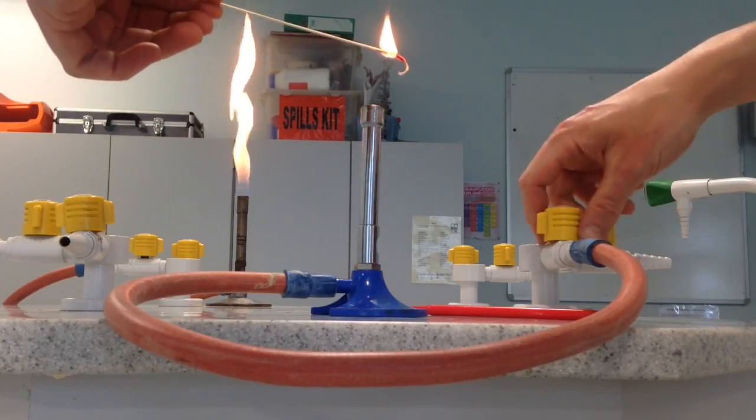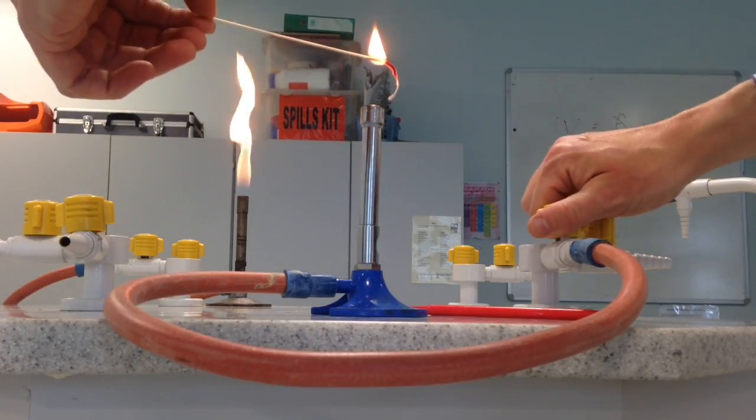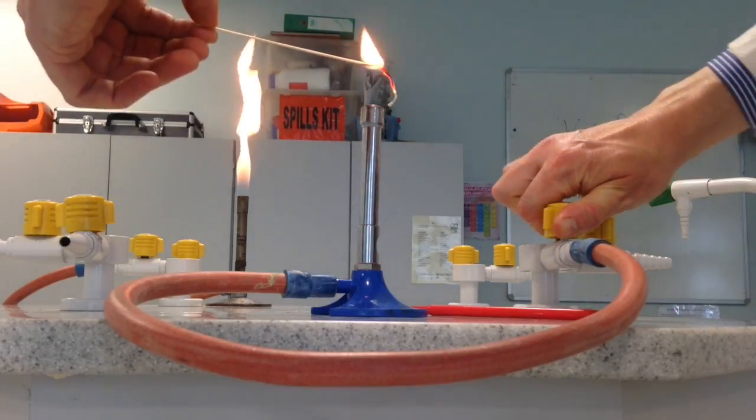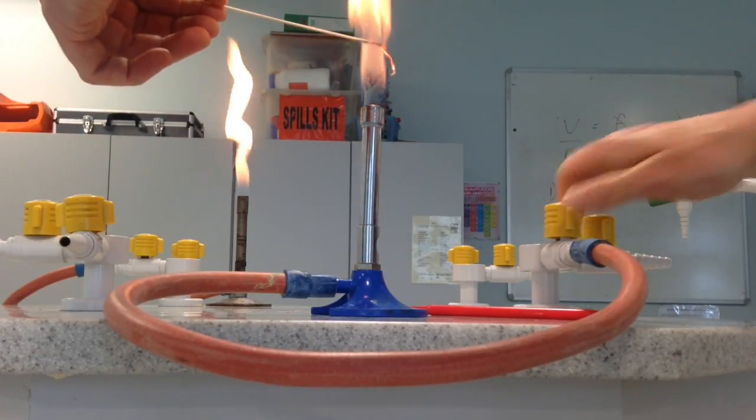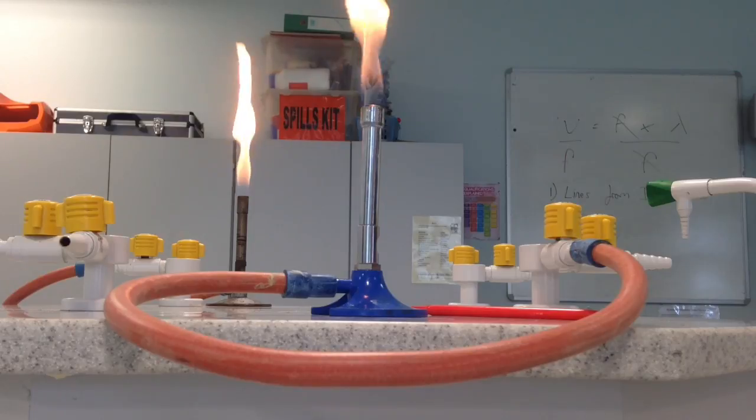Now that it has arrived, we can turn on the gas by lifting the yellow gas tap and turning anti-clockwise, and you see as soon as we do that the Bunsen burner lights.